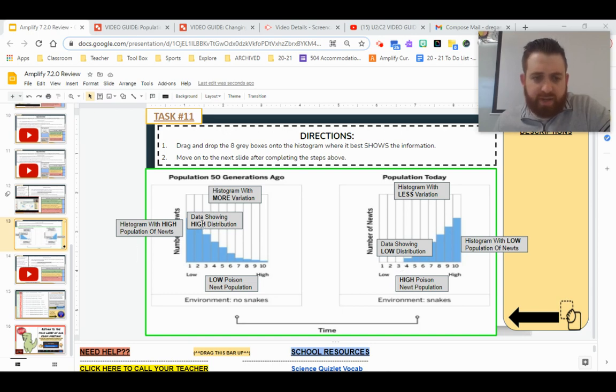On the left side, we have data showing high distribution. So all the places where we have our high bars, that's our high distribution, and all of our data where we have little to no distribution, like on this side, is an example of low distribution.